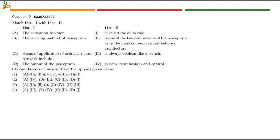Next question: match list one with list two. This match is about perceptron — they have asked about activation function, learning method, areas of application, and output. We'll pick up areas of application first. Most statements in list two start with 'is' except one. Just based on areas of application you can map it to four, because the rest are second-half statements. We can map 'system identification and control' in option four as the correct match to C. C4 is available only in one option, which rules out the other three — option number 3 is the right answer.